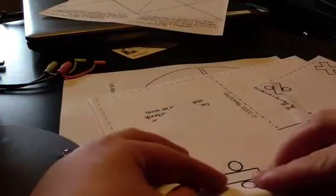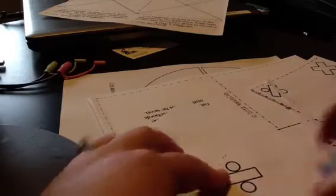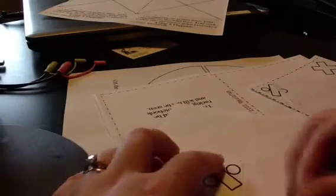Now you have a cootie catcher and you can simply fold your flaps into the center, just like all the cootie catchers you made growing up. So that's that one.